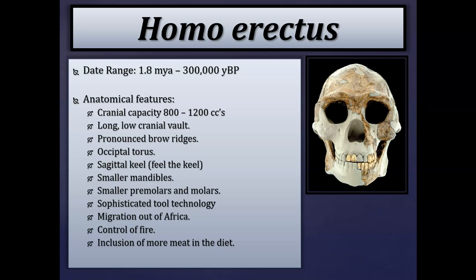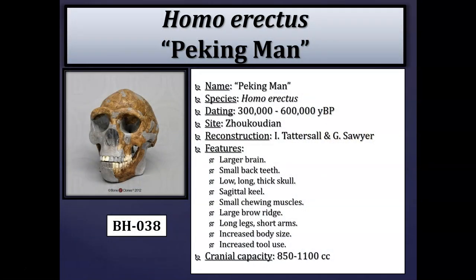Peking Man is one of the most famous fossils attributed to Homo erectus, from the Zhoukoudian site in China, dating between about 300,000 to 600,000 years before present. Features include a larger brain compared to Homo habilis, smaller posterior dentition, long low cranial vaults, the sagittal keel, a large pronounced supraorbital ridge or brow ridge, long legs and short arms indicating commitment to bipedal locomotion, increased overall body size, and more sophisticated tool use.